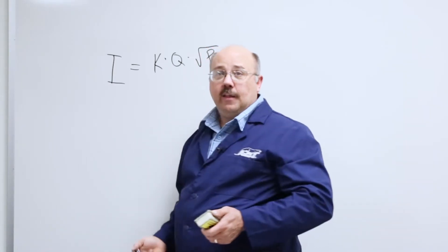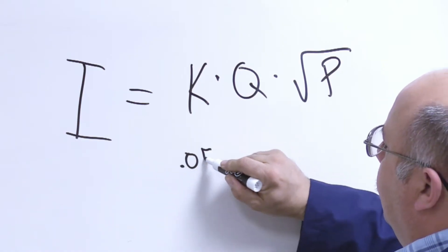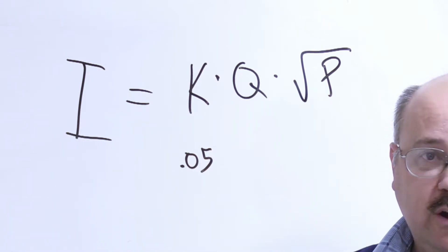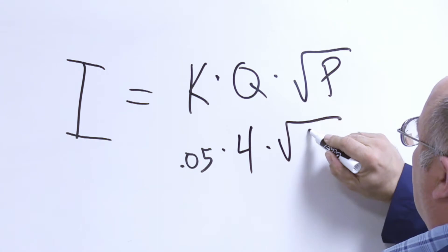In a four gallon at 900 psi system, the numbers would go in at 0.05. That's the k value for a zero degree nozzle, times four, times the square root of 900.